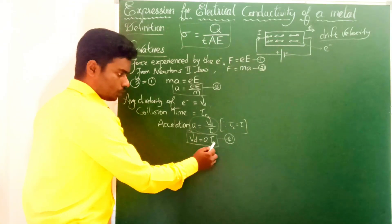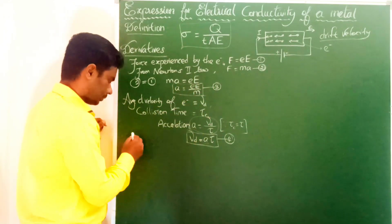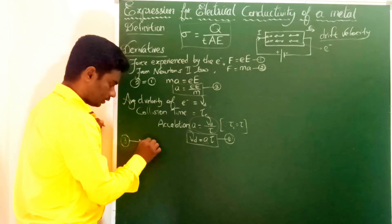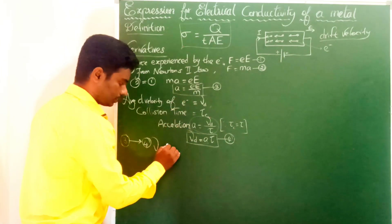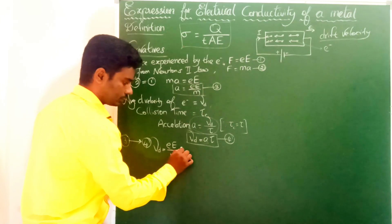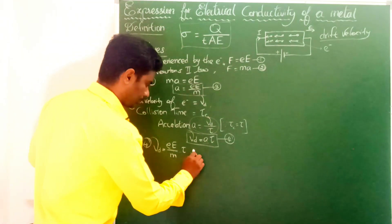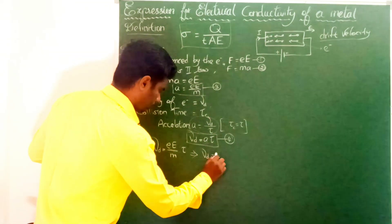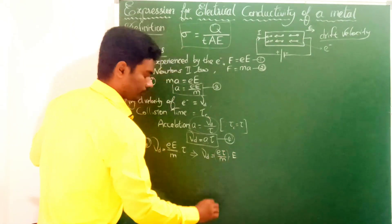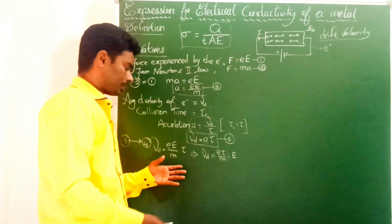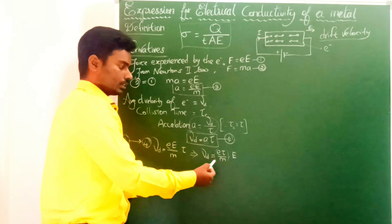Now, substituting equation 3 into equation 4: vd equals (eE/m) times τ, which we rewrite as vd equals eEτ/m. This is equation number 5.